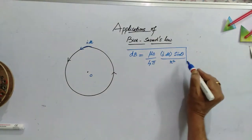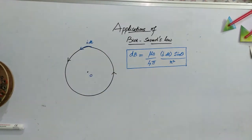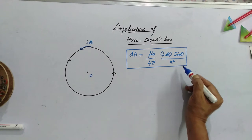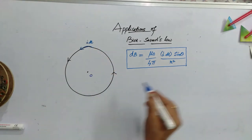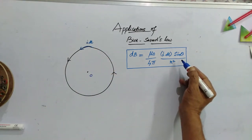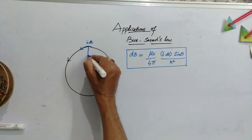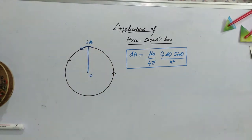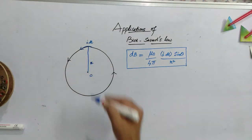Here, this Db is the small magnetic field generated by this small current element ideal. Now here theta is the angle between the radius vector and the current element. What do you understand by radius vector? You have to join the current element to the point of interest. Here, we are interested to calculate the magnetic field at the center. So, this is r. Now, this r is the distance from the current element to the point of interest.